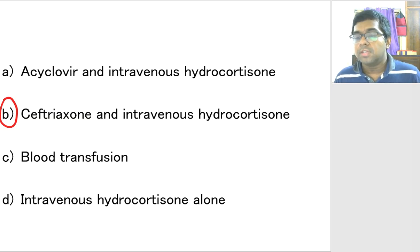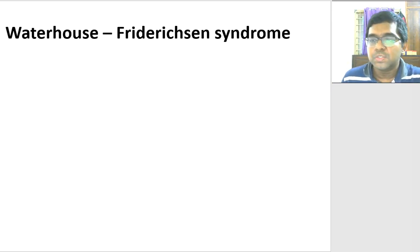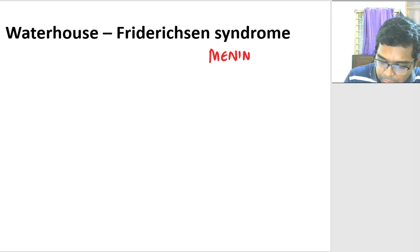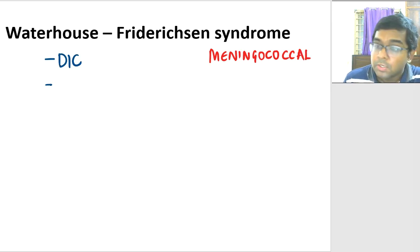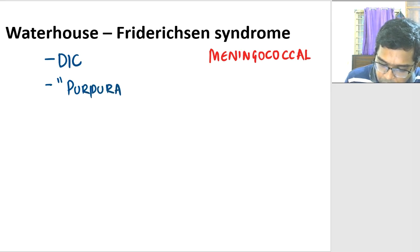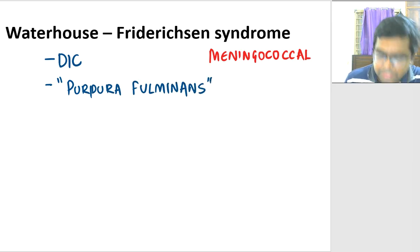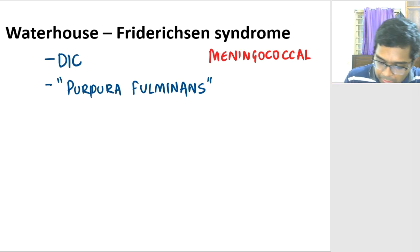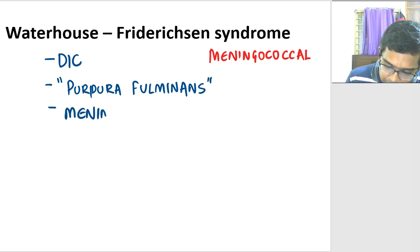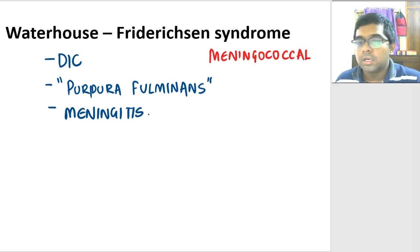The answer is ceftriaxone — a third-generation cephalosporin for meningococcal infection — and IV hydrocortisone, because without steroids the shock is not going to respond. Whenever a child in shock is not responding to fluids or vasopressors, always think about a problem in the adrenal — adrenal crisis. Give a shot of hydrocortisone and the child will show improvement. Waterhouse-Friderichsen syndrome is also associated with meningococcal infection. It is a fulminant meningococcal infection characterized by DIC (disseminated intravascular coagulation), purpura fulminans — a combination of purpura with necrotic rash due to intravascular coagulation in small blood vessels — and associated meningitis.